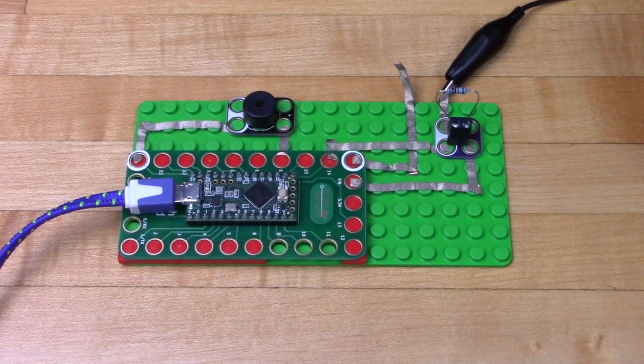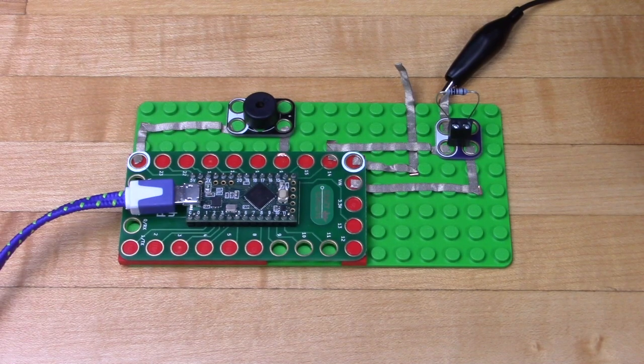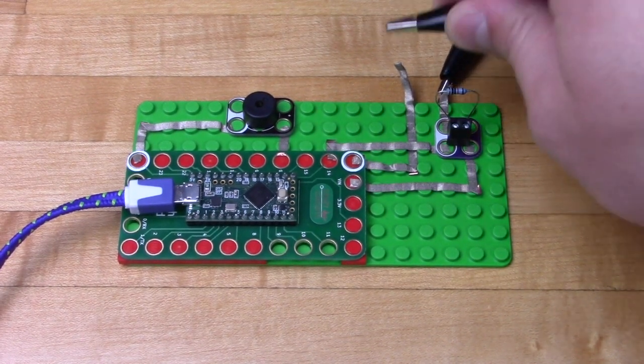To test out your code take one of your alligator clips and then connect it to both sides of tape. If it works, great. If it doesn't, check your upload again.